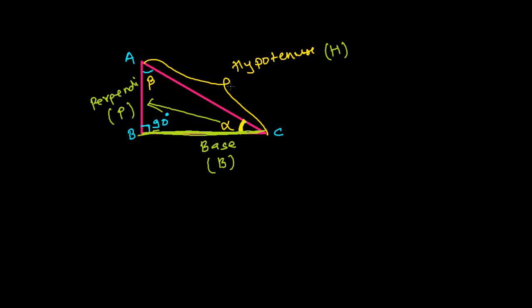You know that all right angle triangles follow the Pythagorean rule. So let me write the Pythagorean rule. It always says that the square of the hypotenuse is always the sum of the square of perpendicular and base. I'm going to say square of AC equals the sum of the square of AB and BC.